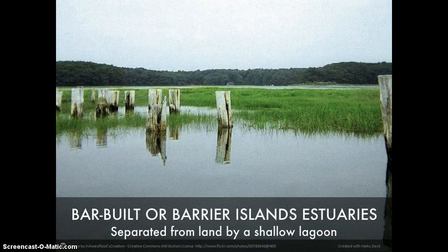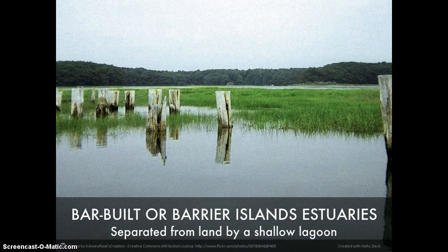Bar-built or barrier island estuaries are generally separated from land by a shallow lagoon. They are formed by the creation of sandbars parallel with the shore, usually adjacent to slow-flowing rivers that seep fresh water into the coastal waters. Wave action plays a pivotal role in the creation of these sandbars, but their existence also may be caused by some chemical interactions between the saltwater and the freshwater. The outer banks of North Carolina are an example of this type of estuary.